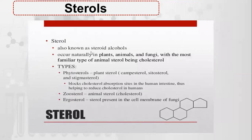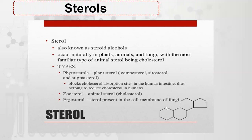Next are sterols, also known as steroid alcohols. They are present in animals, plants, and fungi. The most popular animal sterol is cholesterol. Types include phytosterols found in plants, such as campesterol, sitosterol, and stigmasterol, which block cholesterol absorption sites in the human intestine and help reduce cholesterol in humans. Zoosterols are found in animals, such as cholesterol. Ergosterols are found in fungi. The basic skeleton of a sterol has three six-membered rings and one five-membered ring.